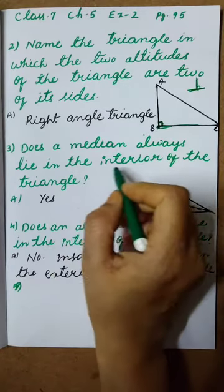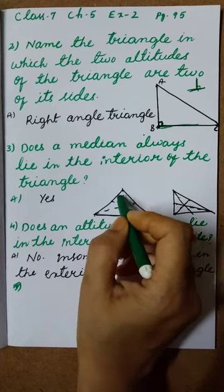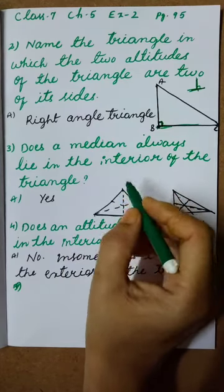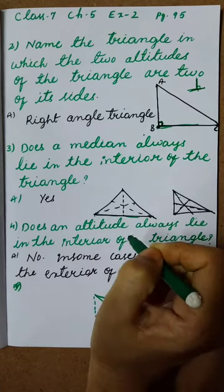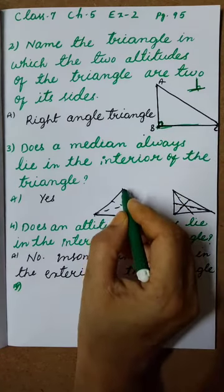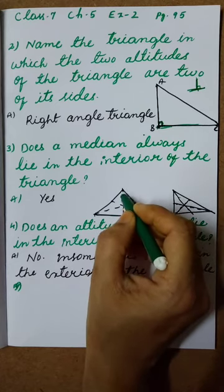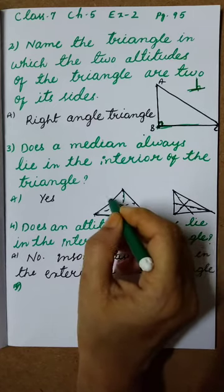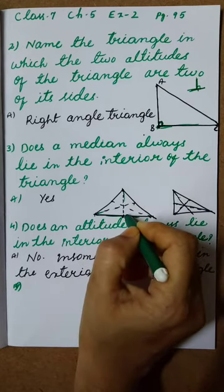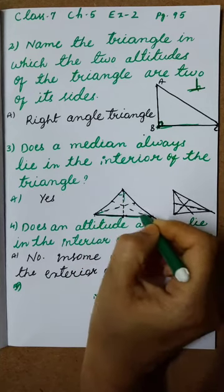Does the median always lie in the interior of the triangle? They are asking whether the median is interior or not. Interior means inside. Median means from a vertex to the midpoint of the opposite side — we have to join. There are three vertices, so three medians are there. These medians are interior only. So, the answer is simply yes.